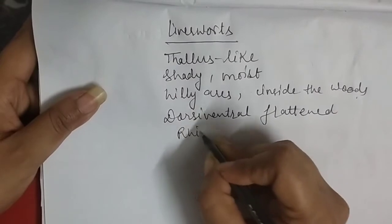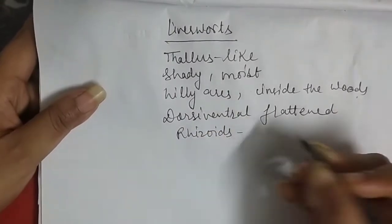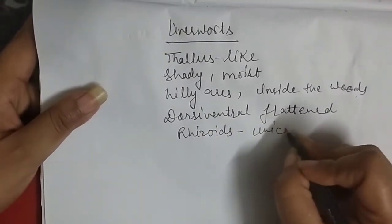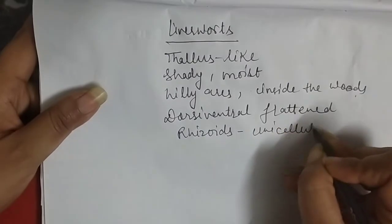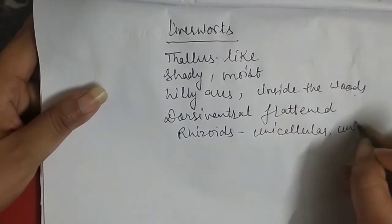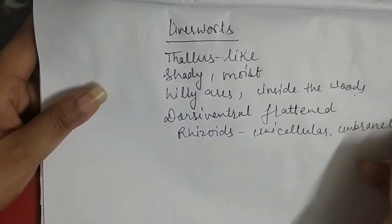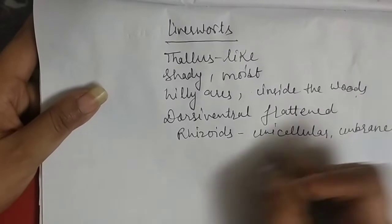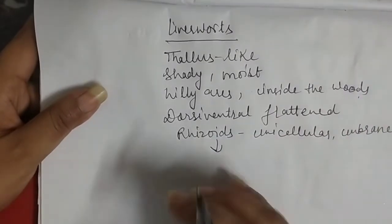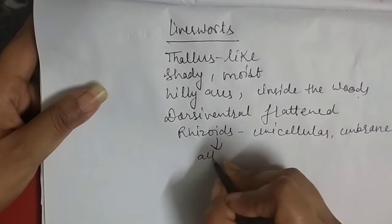The rhizoids are simple, unicellular, and unbranched. These rhizoids help attach the liverworts to their base.